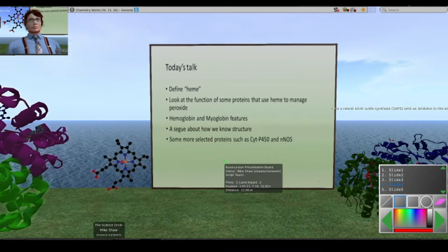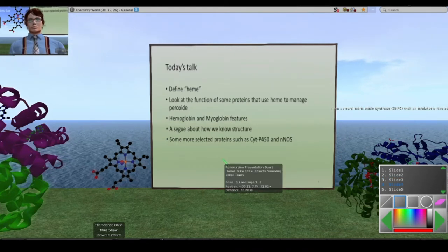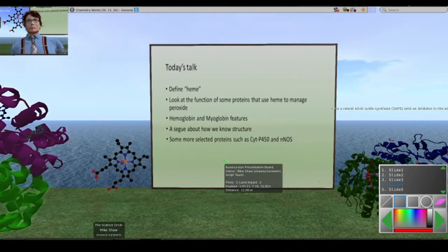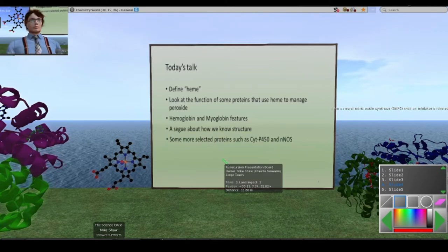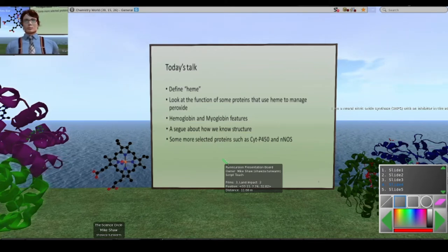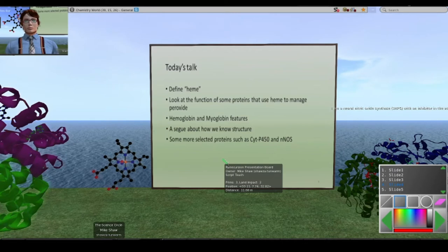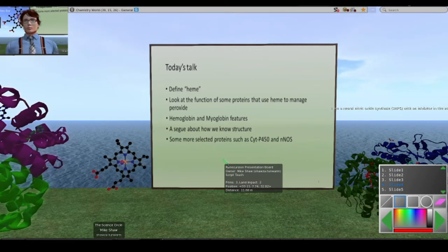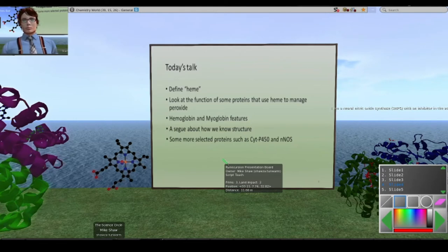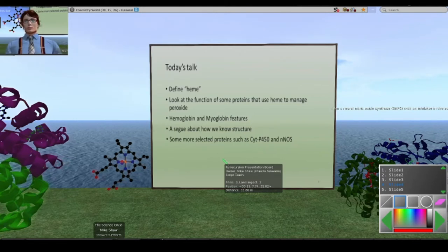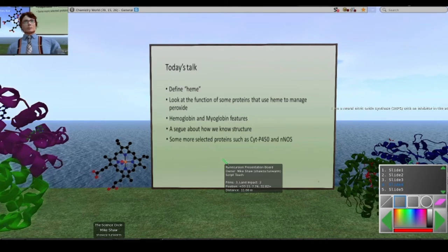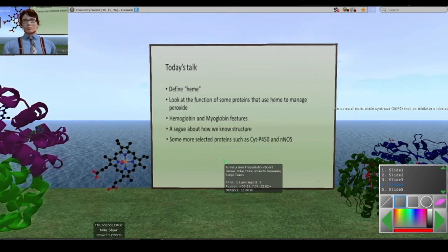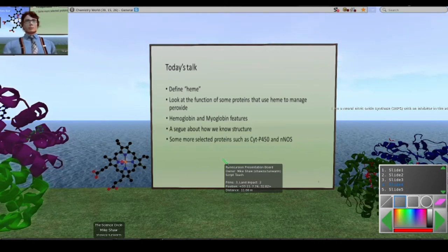I'd also like to thank support from Southern Illinois University Edwardsville and everyone for coming and continuing to support the Science Circle and Second Life. So without further ado, today's talk. I'm going to talk about what heme is, in case you don't know. Heme is a part of many proteins that manage peroxide, or transport oxygen, or make nitric oxide, or a variety of other useful functions in the body.